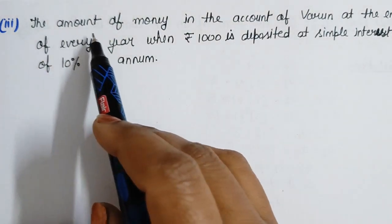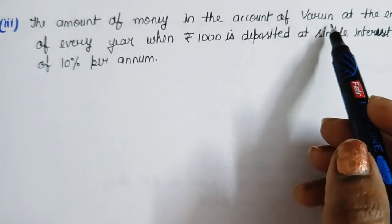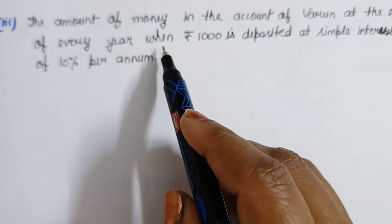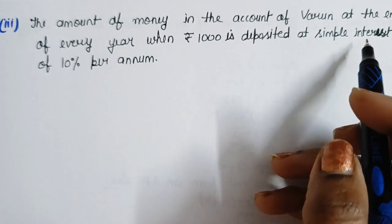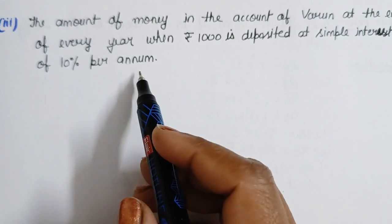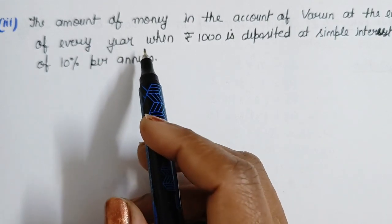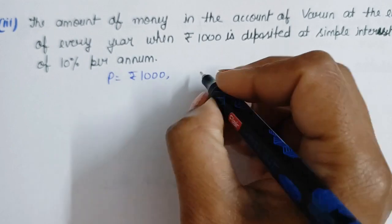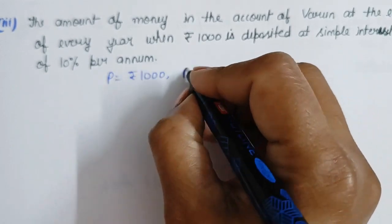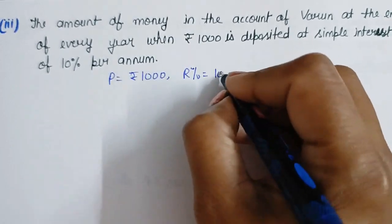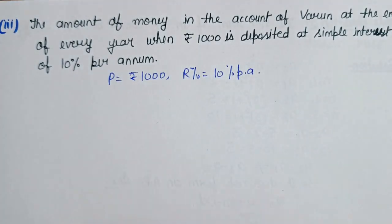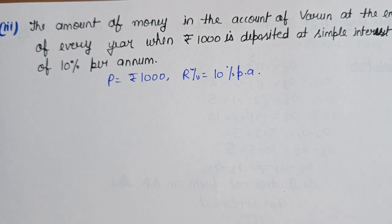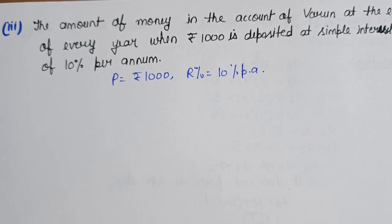Third part: the amount of money in the account of Varun at the end of every year when Rs. 1000 is deposited at simple interest of 10% per annum. So here the principal is equal to Rs. 1000 and the simple interest rate is 10% per annum. We need to calculate the amount of money at the end of every year.